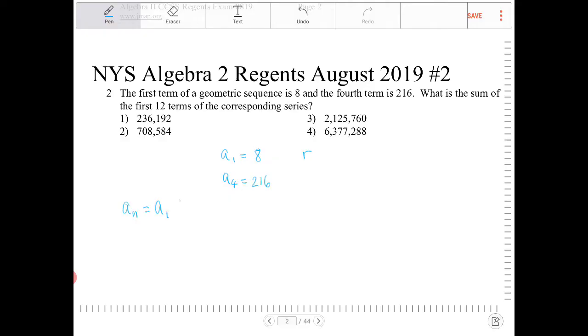A sub N is equal to A sub 1 times R to the N minus 1. And R can be found by any subsequent term divided by the previous term, right? By any term divided by the previous term.